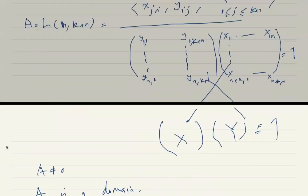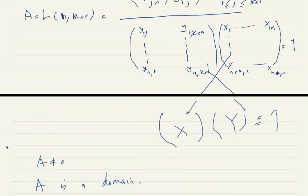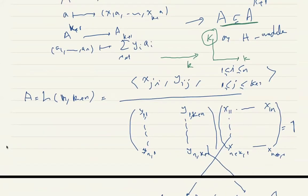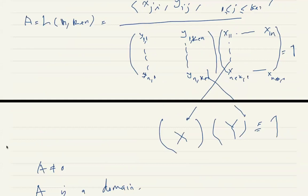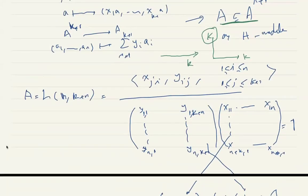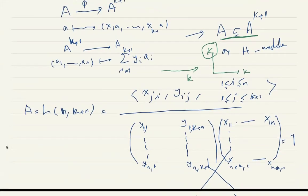Audience question: you said it becomes a domain — what are the conditions? Response: n has to be more than one. If n is more than one, it's always a domain.